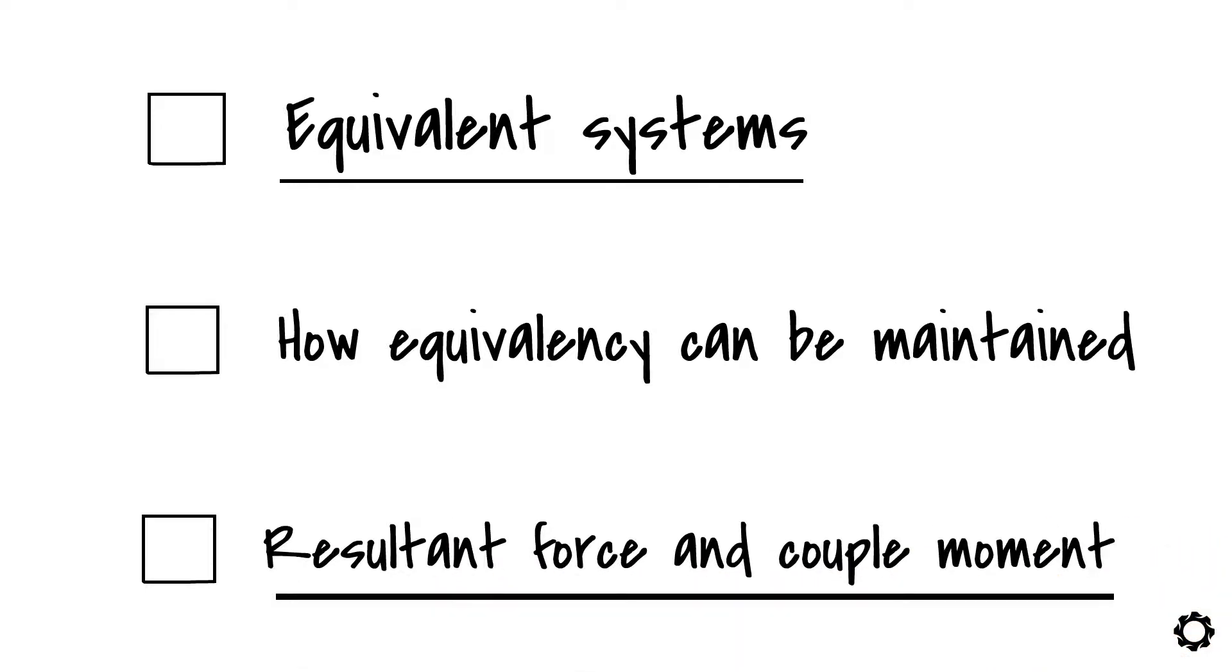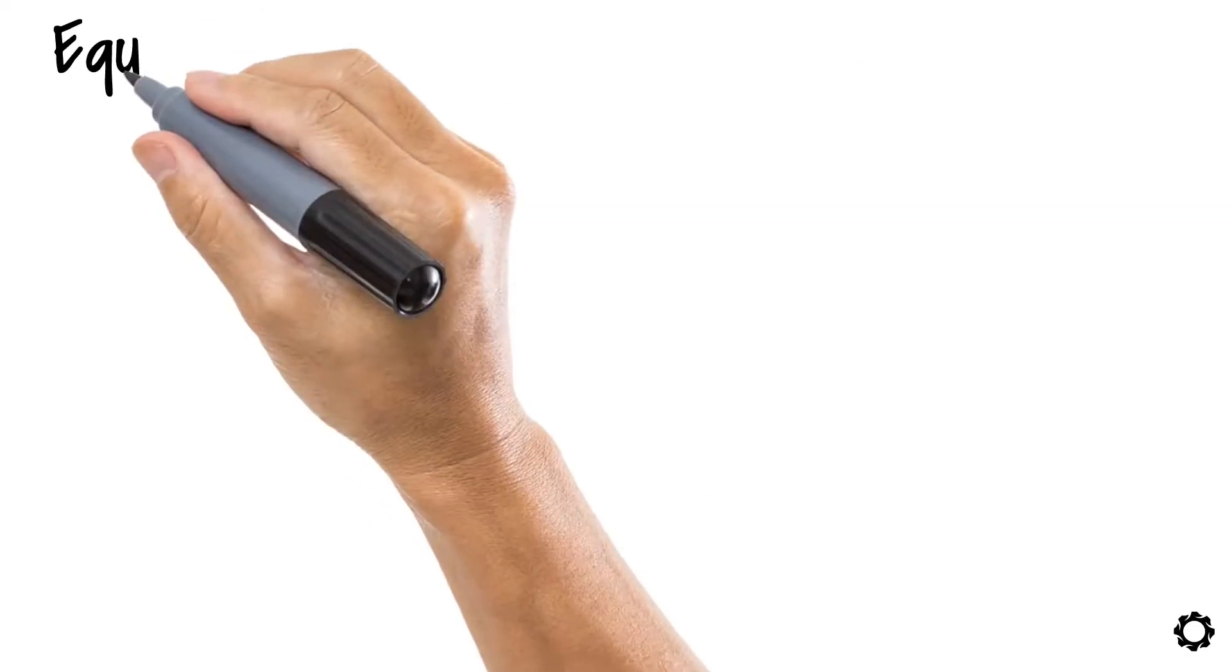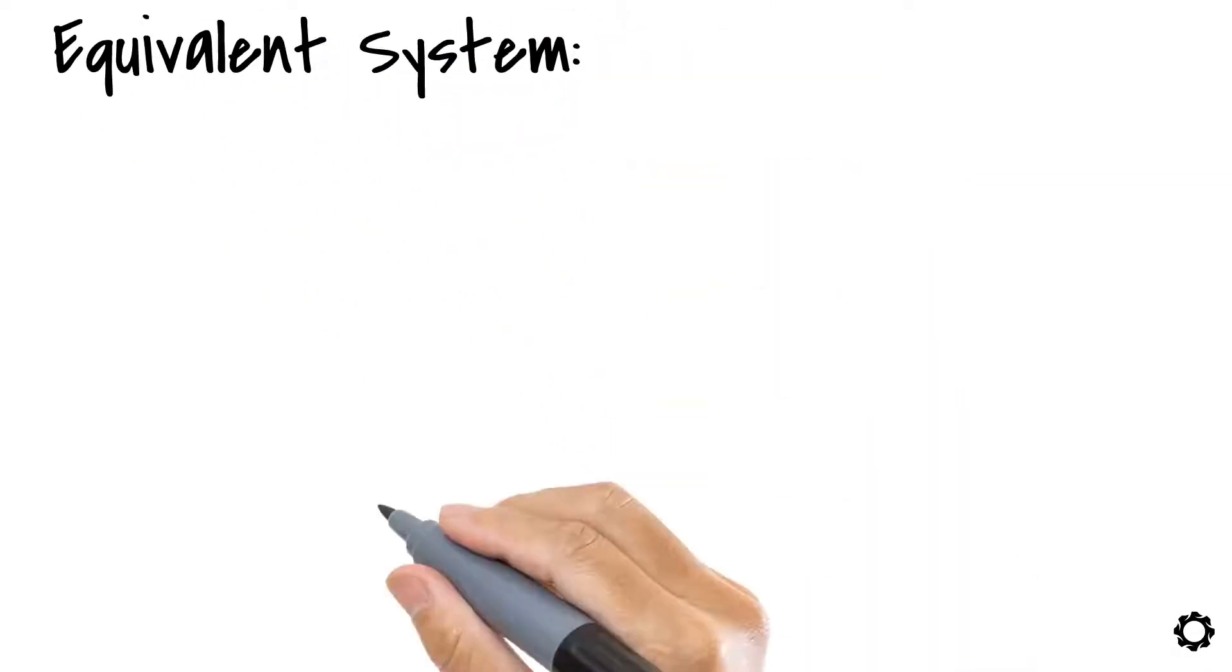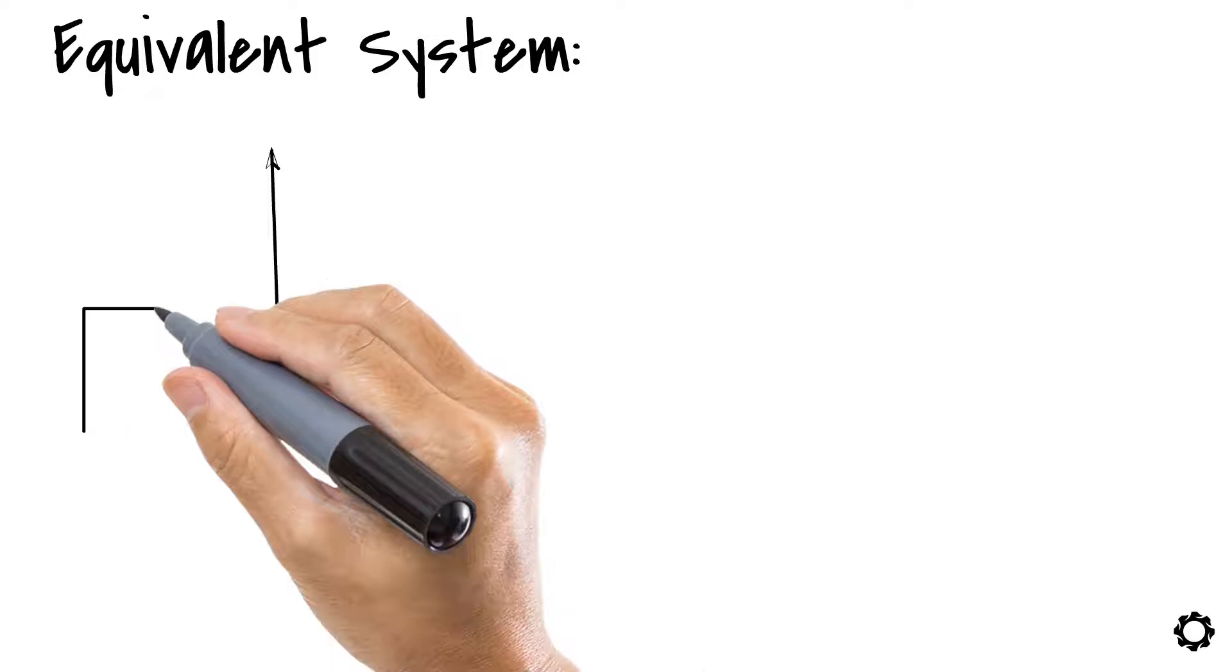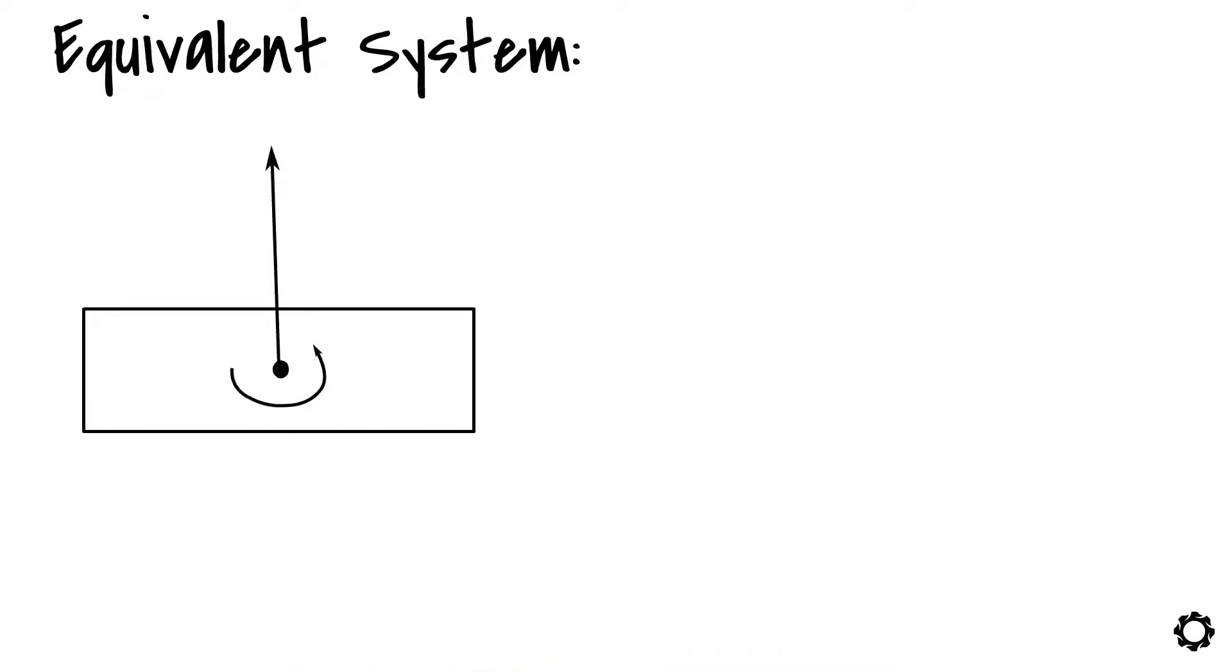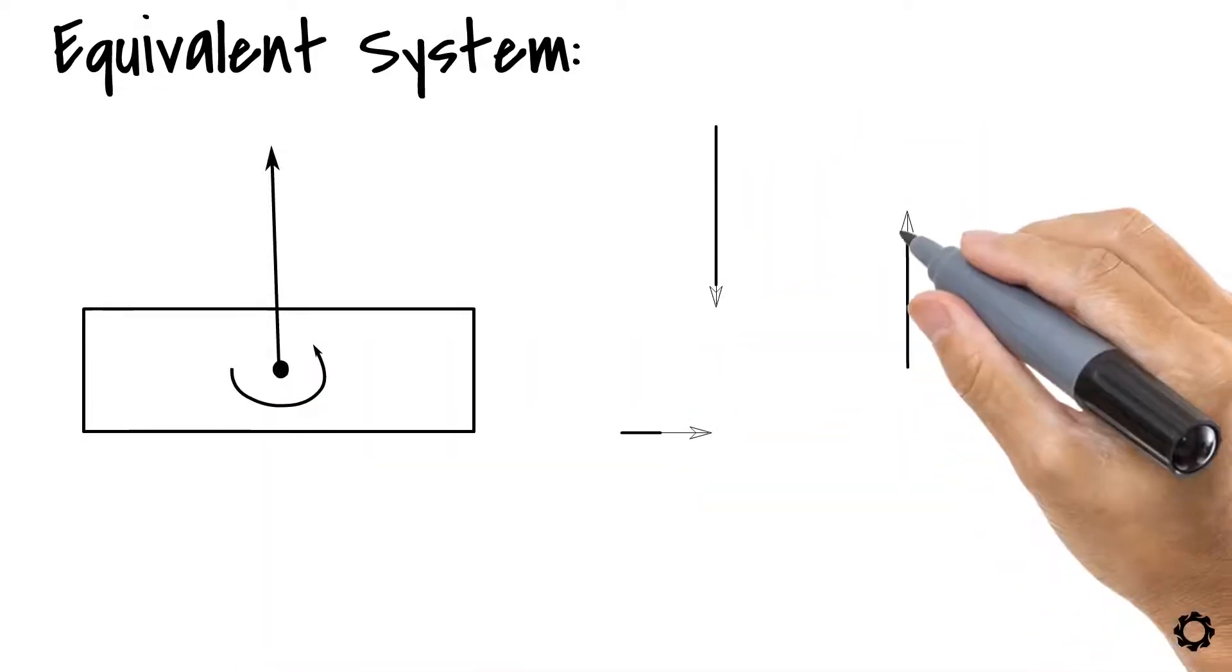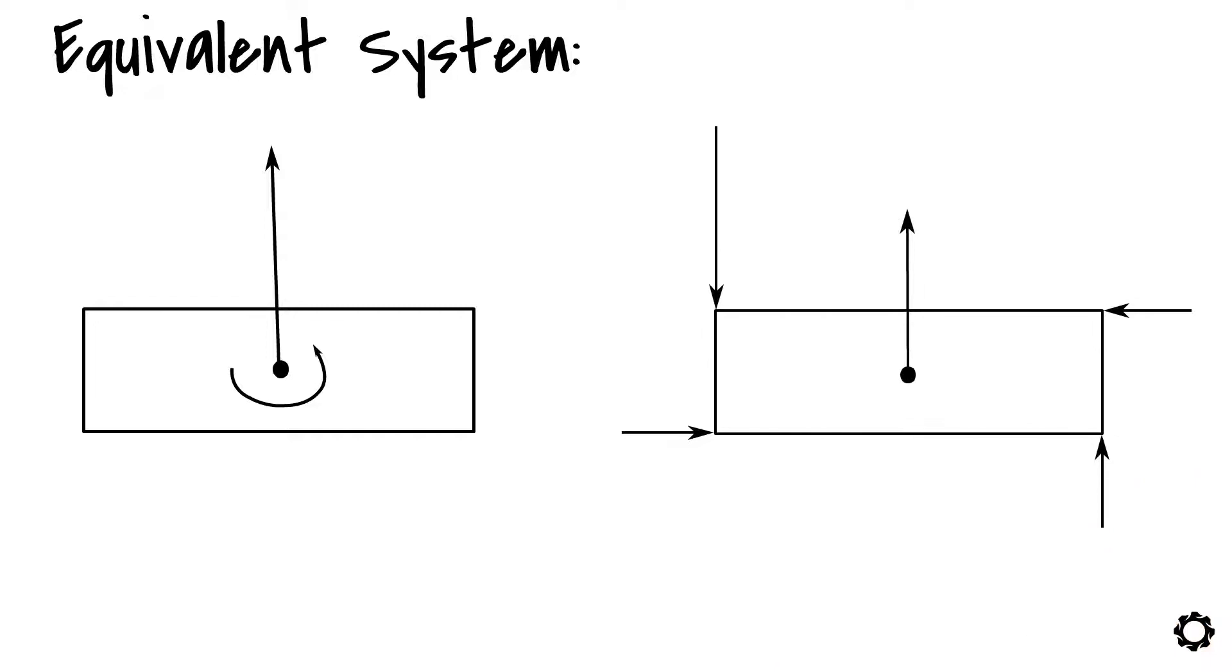Let's get started. So, what do we mean by an equivalent system? If the resultant force and couple moment have the same external effect on the motion of the body as the effect of separate forces and couple moments on the system, then we can say that the resultant force and couple moment are equivalent.